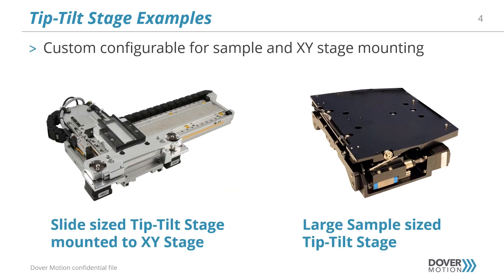Tip tilt stages are often customized to match the application needs to minimize size and Abbe error. Shown here, the example on the left is a slide holder mounted to a tip tilt stage which is being moved in XY by a precision cross roller stage and a long travel shuttle stage for sample load and unload motion. The example on the right is a tip tilt stage designed for larger size samples and is designed to be mounted directly to a Dover Motion smart stage XY linear positioner.